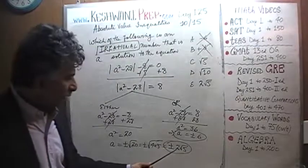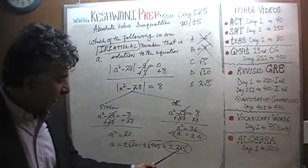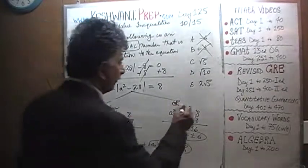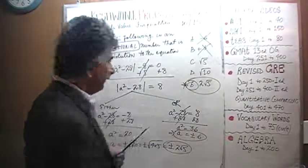Therefore, we are looking for either a positive 2 root 5 or a negative 2 root 5. Negative 2 root 5 is not here. The answer is positive 2 root 5. The answer is E. That's it.